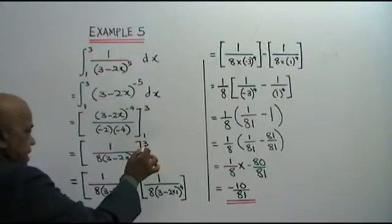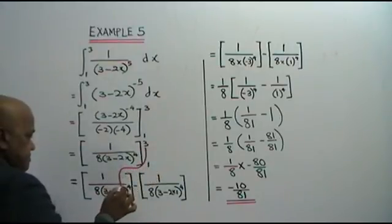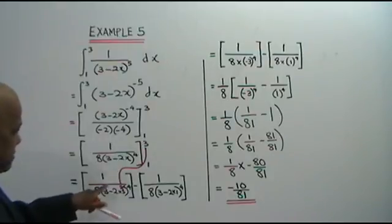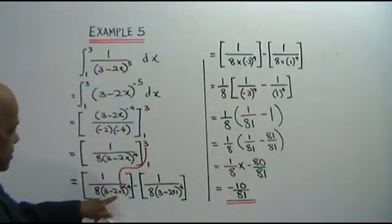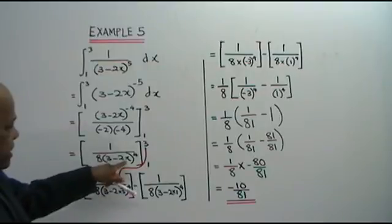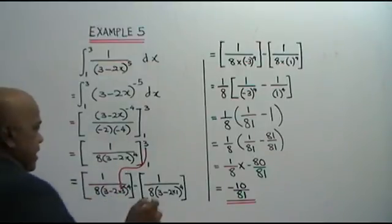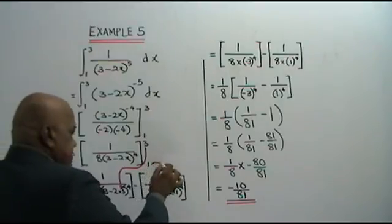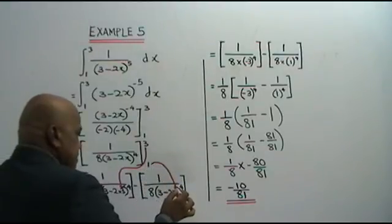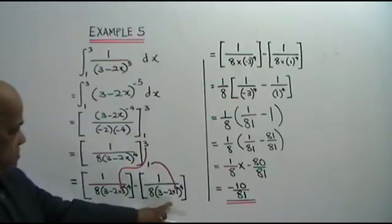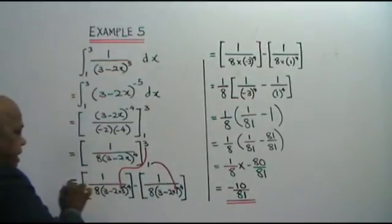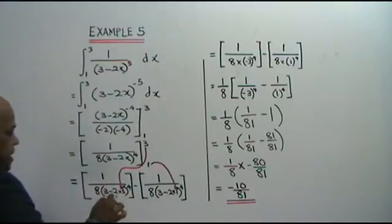Now we substitute. First we substitute 3 here: 1 over 8 times (3 minus 2 times 3) to the power 4. And then you substitute x with 1: 1 over 8 times (3 minus 2 times 1) to the power 4.